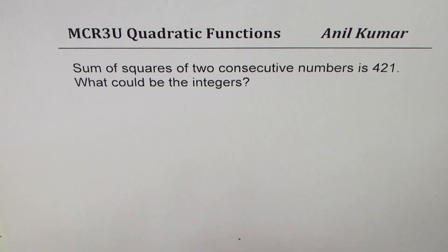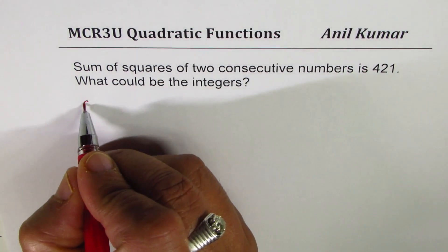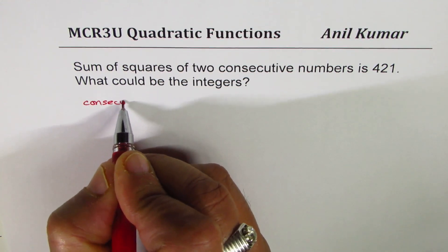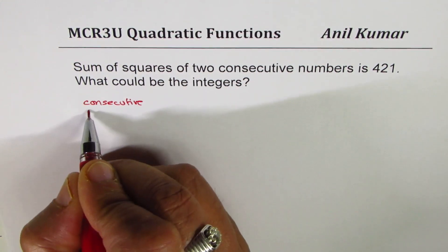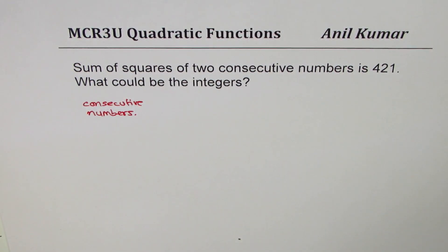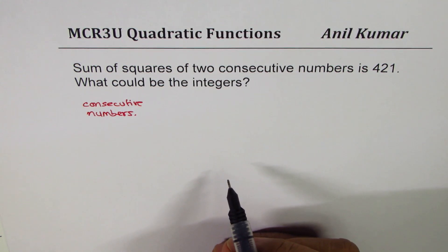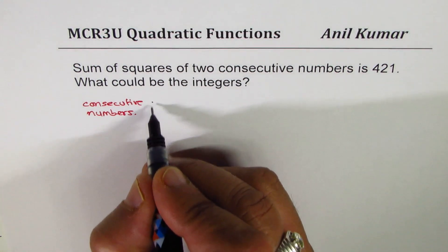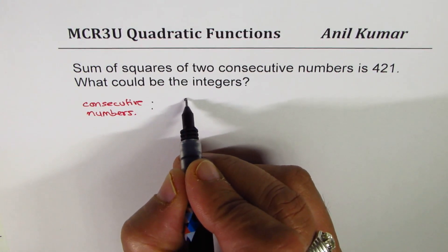First thing to understand is consecutive numbers. What are consecutive numbers? Numbers like two, three - they come together, right? Five, six; ten, eleven - they are consecutive numbers.